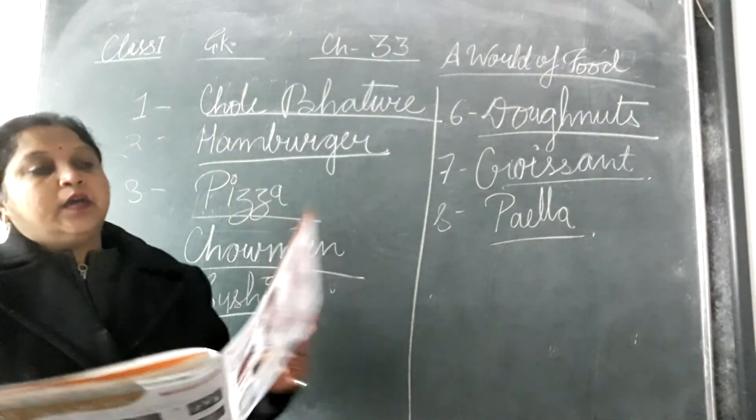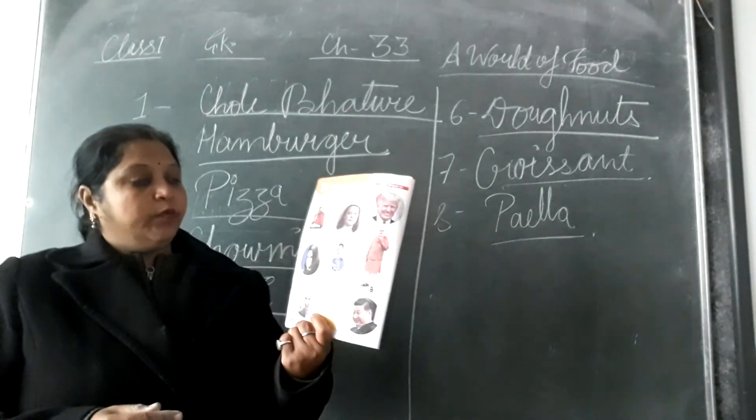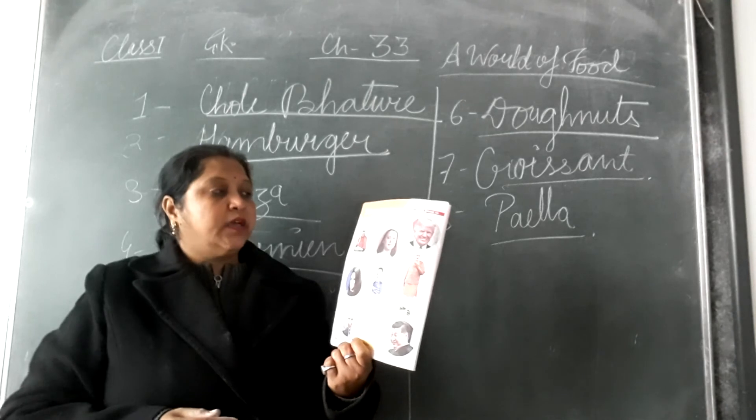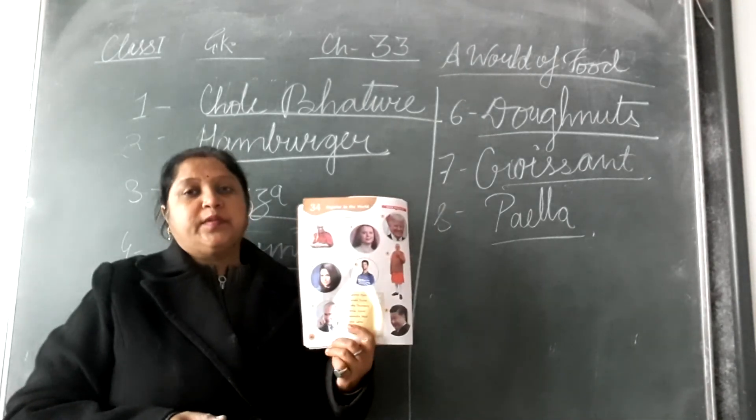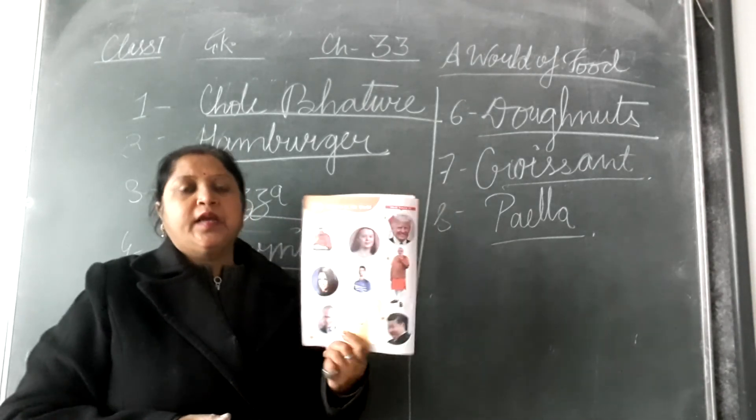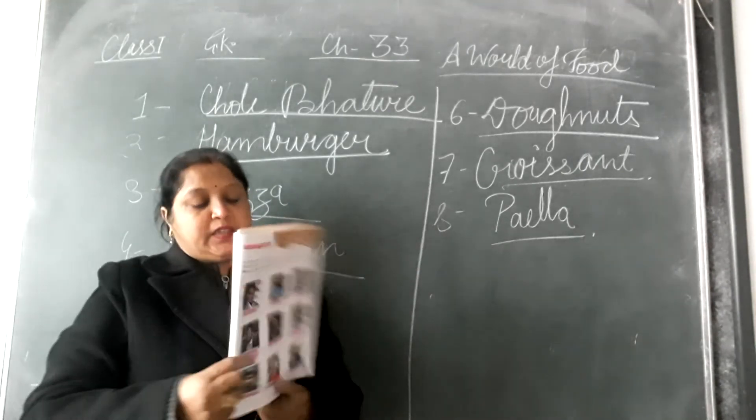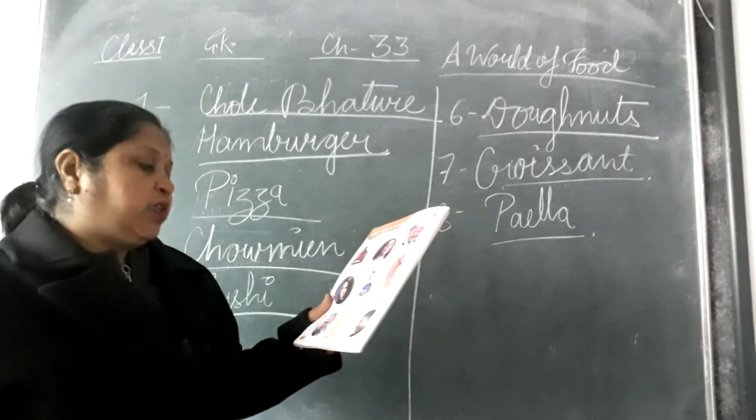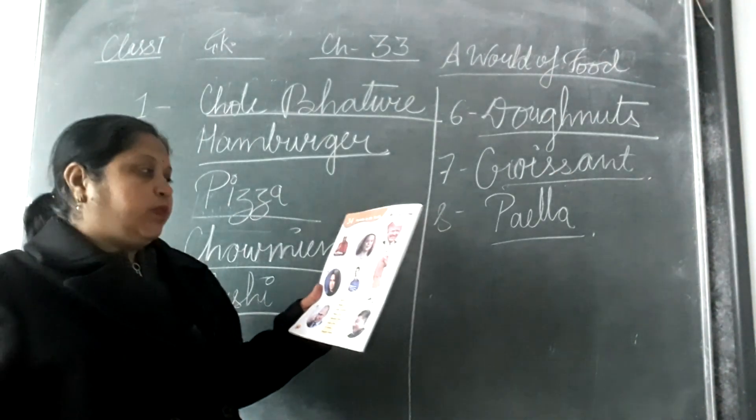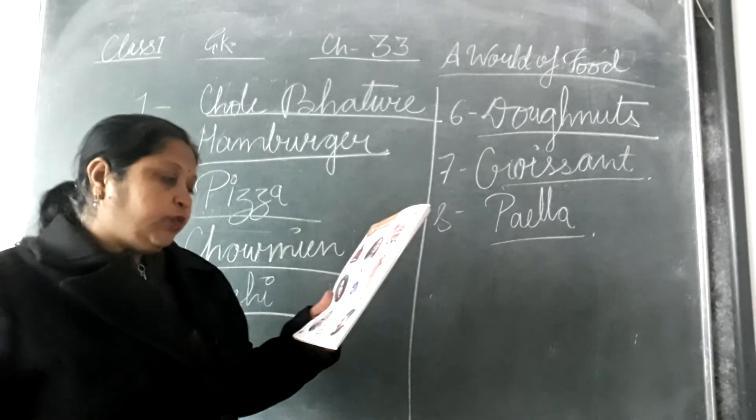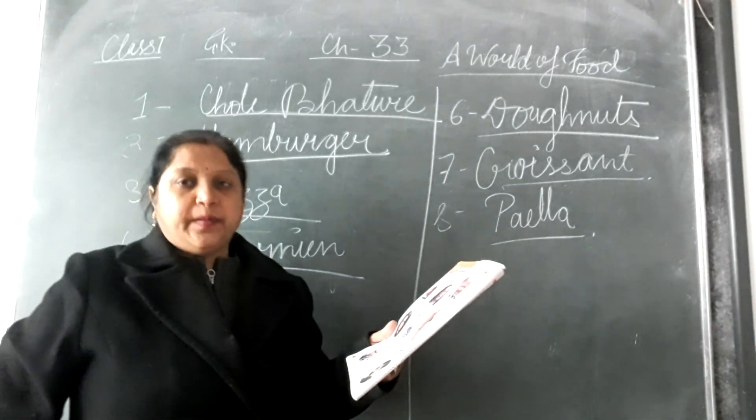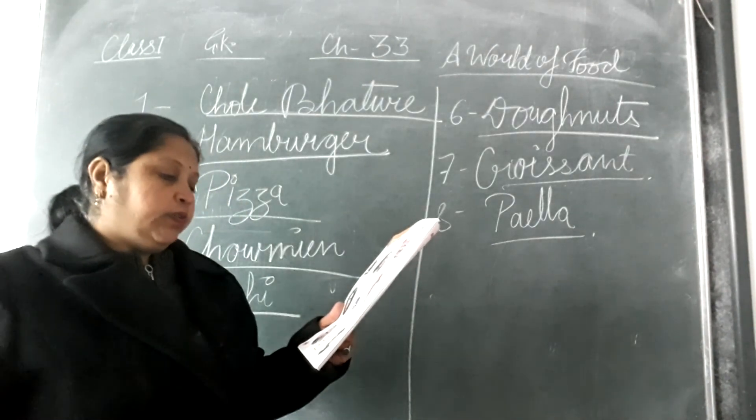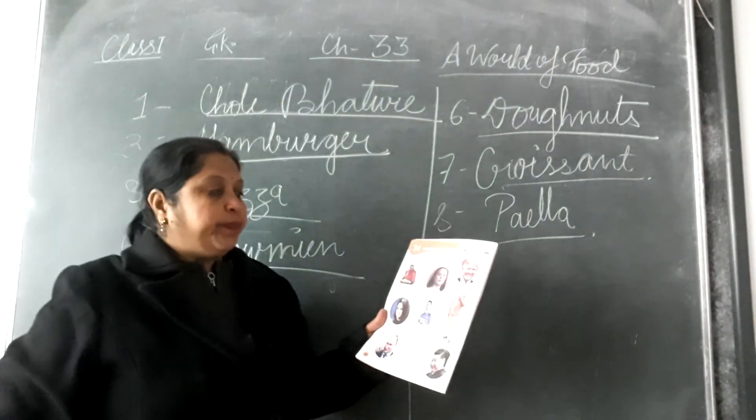Now it's time for homework. Complete chapter 34 in your book. Here are given some pictures, some famous people's pictures. You have to match the name. I will tell you. First picture is Dalai Lama, he is a very famous personality. Second picture is Donald Trump, he was president of America. Third picture is Greta Thunberg. You will complete it in the book.